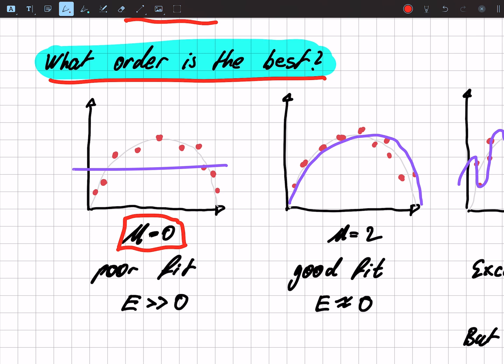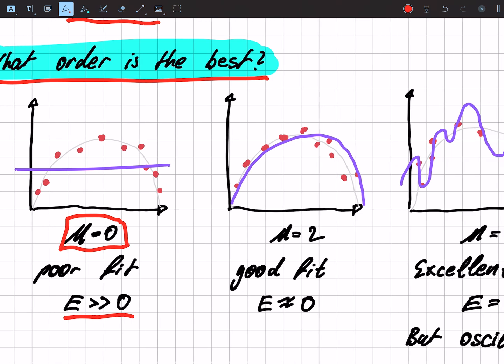We have basically a straight line and the data is spread very far from that line, so we have a very large error. If we choose a model of degree two, we have basically a parabola and that is a very good fit, where the error is close to zero.